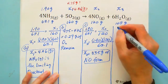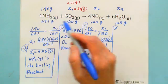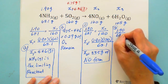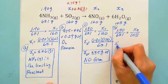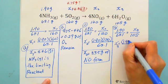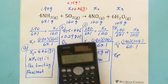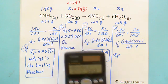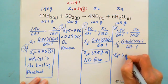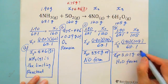For question D, same approach: 1.90 over 68.1 equals x3 over 108. So x3 equals 1.90 times 108 divided by 68.1, which gives 3.01 grams of water vapor.